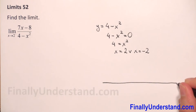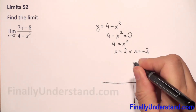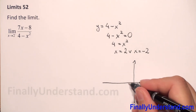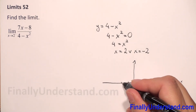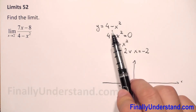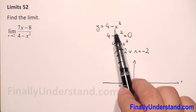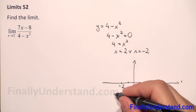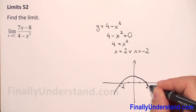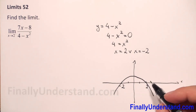We draw the xy-plane. We mark 2 and negative 2 on the x-axis. As noted, the coefficient before x squared is negative, so the parabola opens down, passing through these two roots.